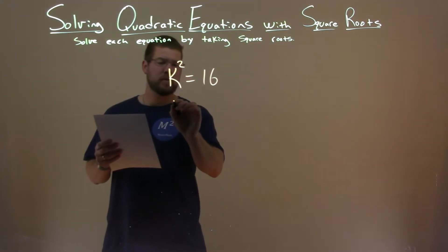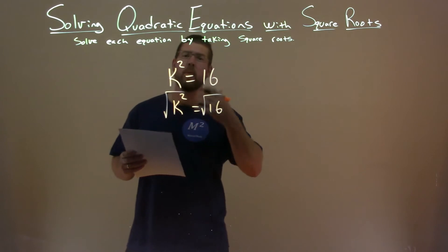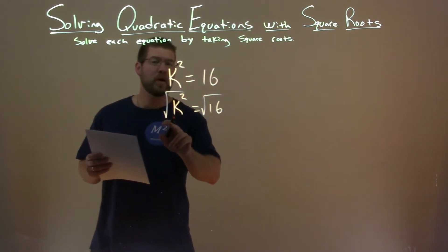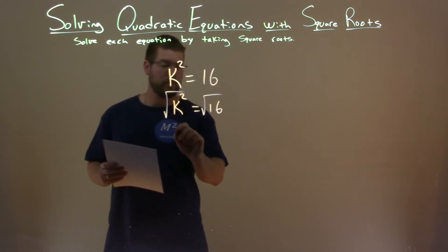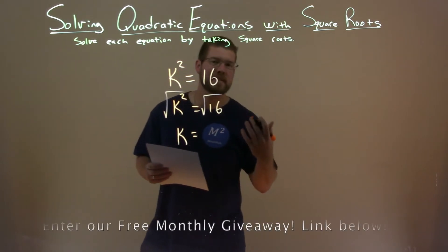The first thing I need to do is, I have my k squared equals 16. I need to take the square root of both sides. What does that leave me? Well, square root of k squared leaves me with just a variable k, so I'll cancel that out, and then the square root of 16.